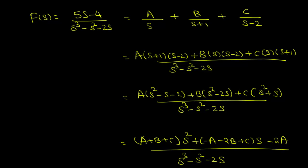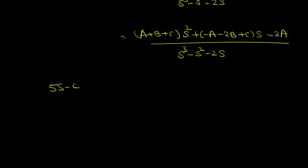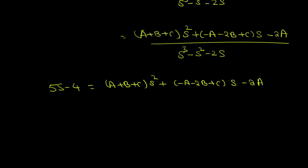So 5s minus 4 is equal to (A plus B plus C) times s squared, plus (minus A minus 2B plus C) times s, minus 2A.